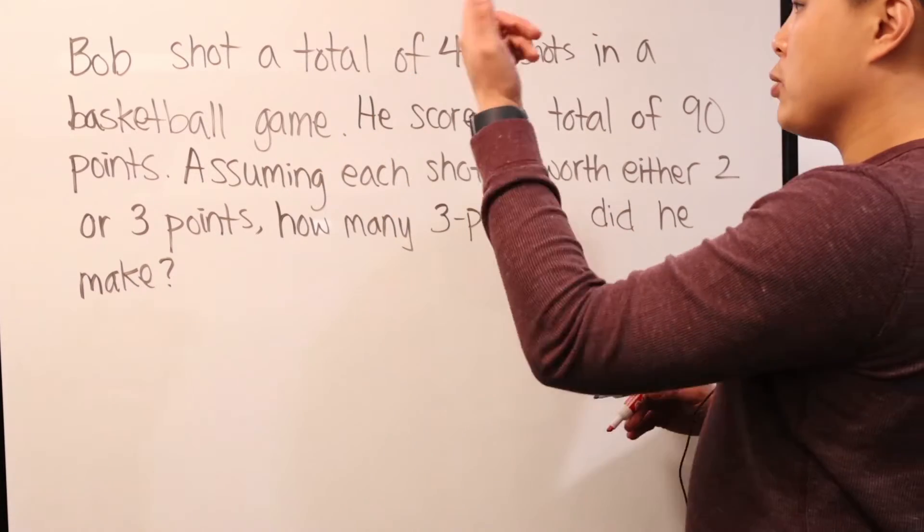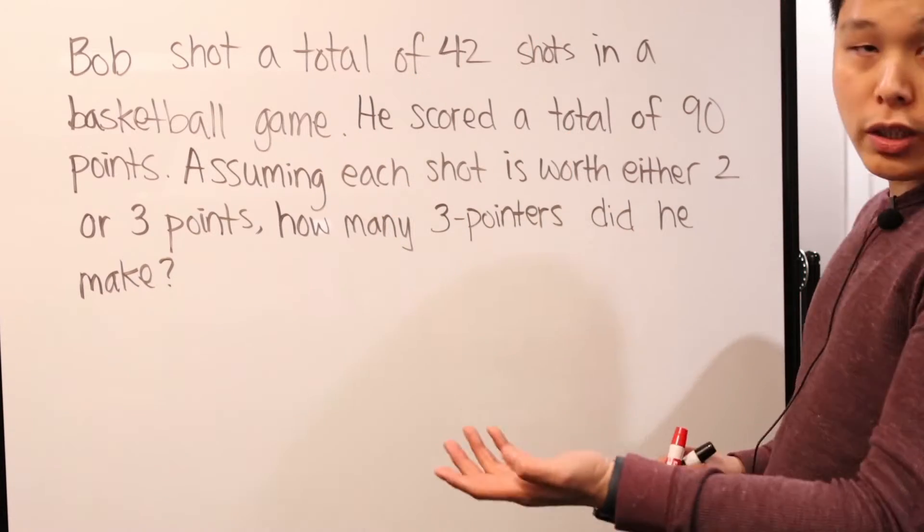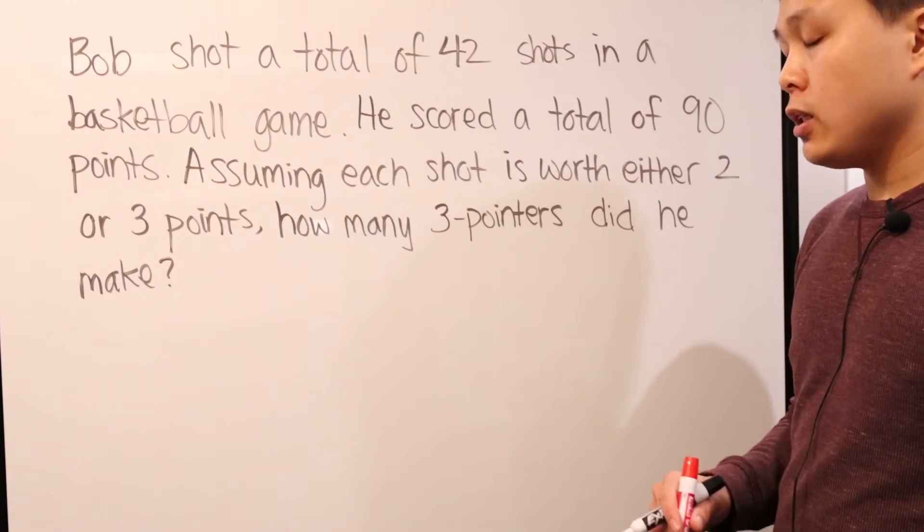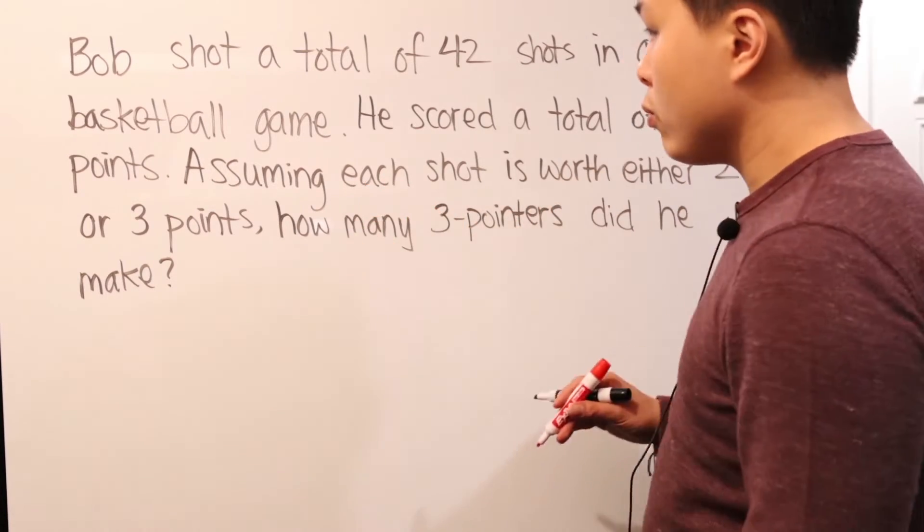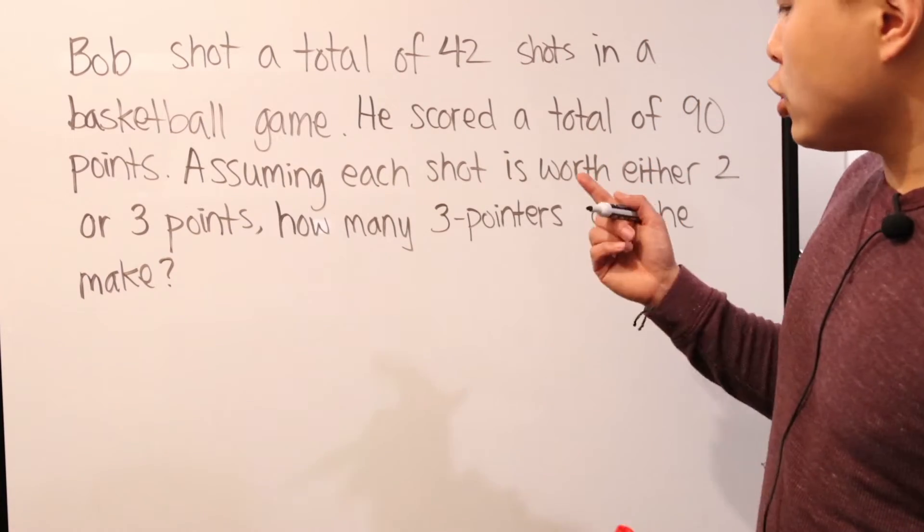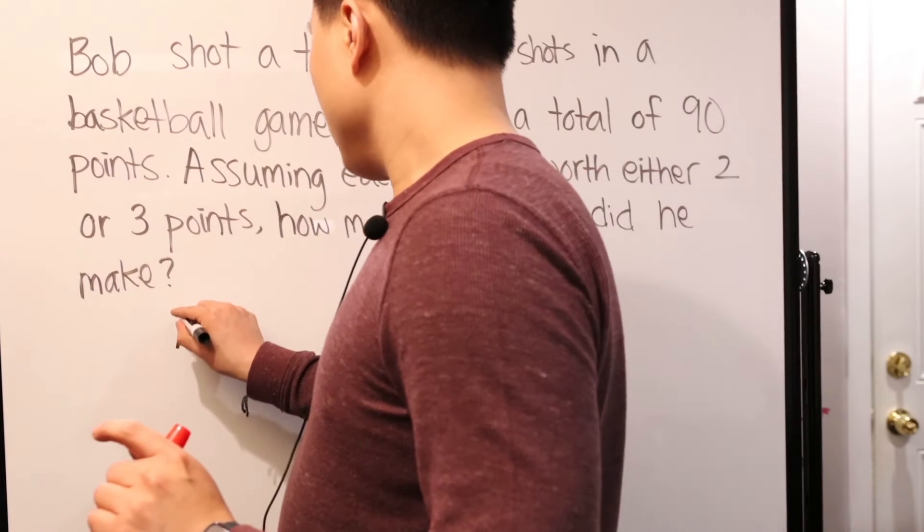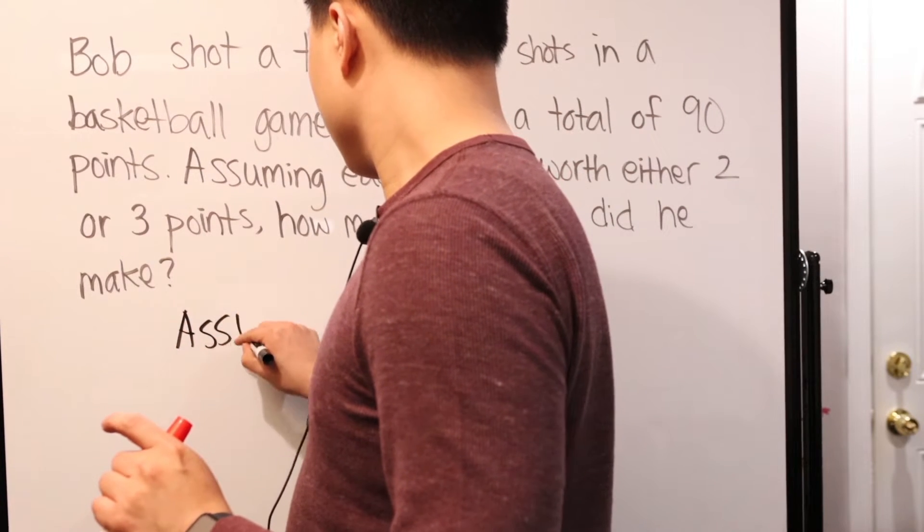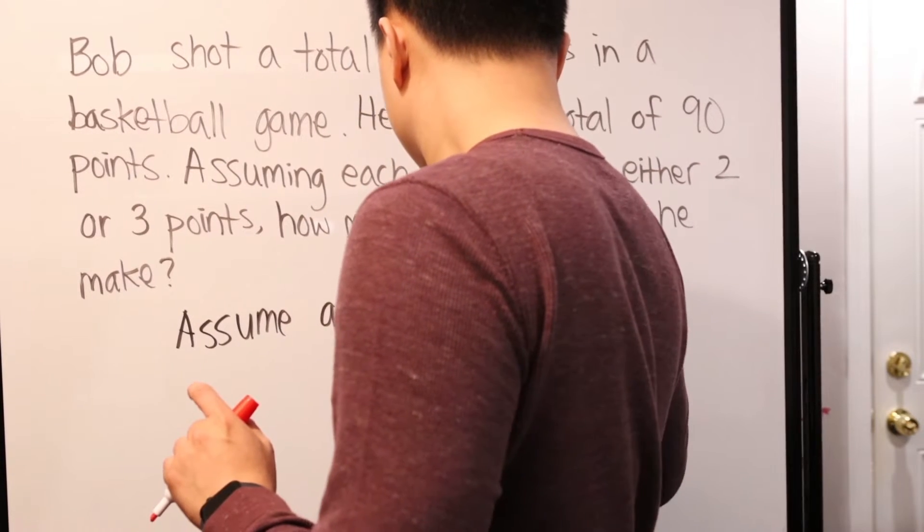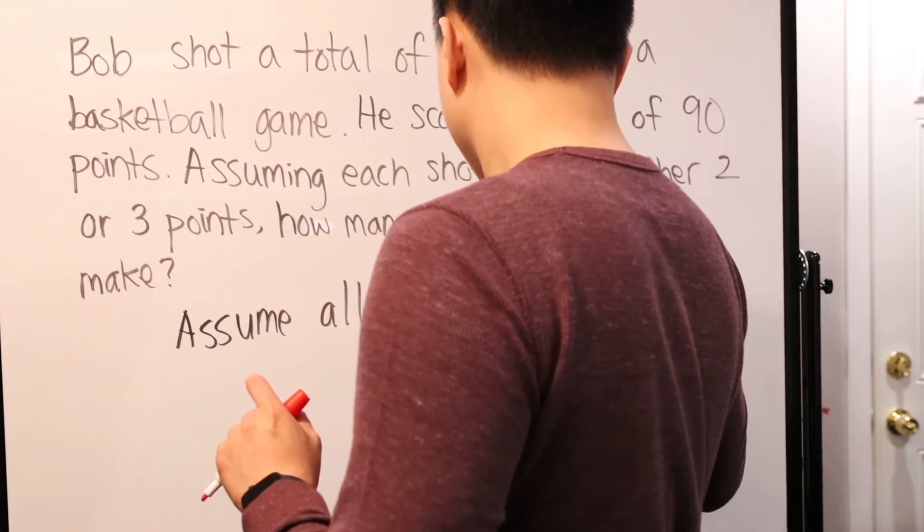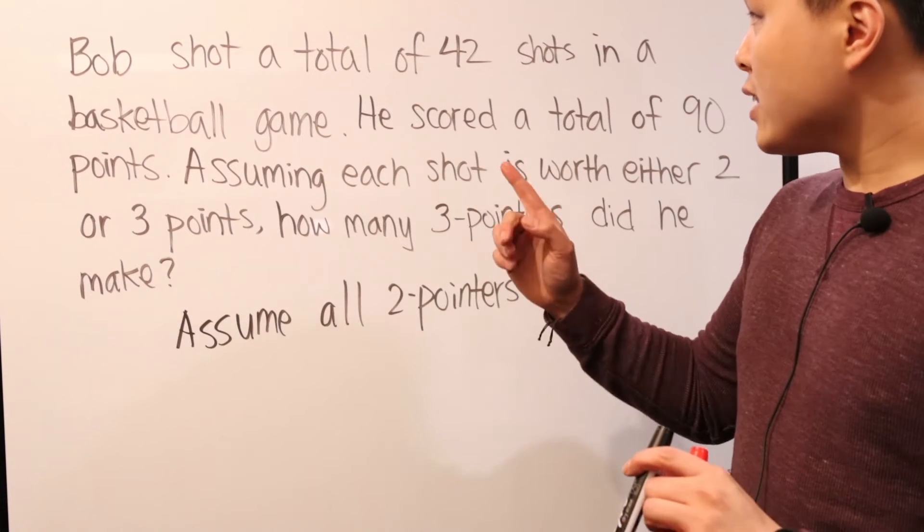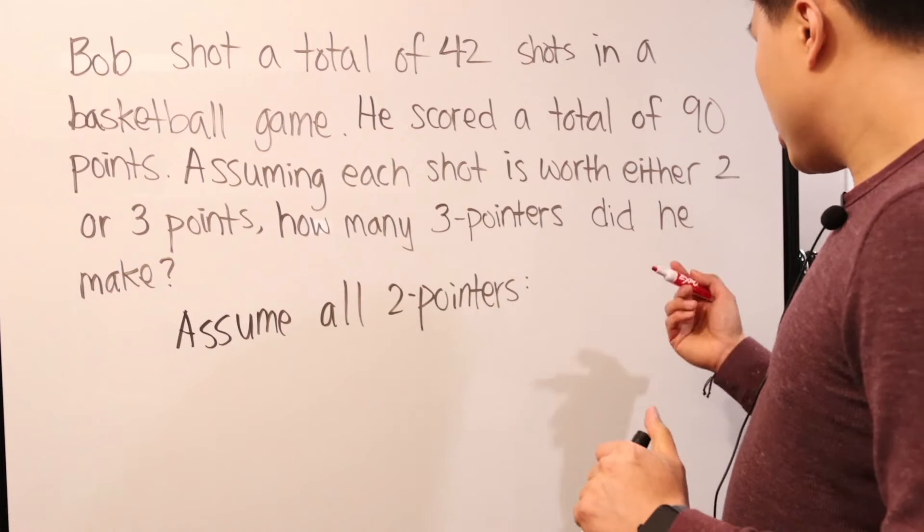We see that again, Bob shot a total of 42 shots. And then they're either going to be two-pointers or three-pointers and he scored a total of 90 points. We're just trying to find how many three-pointers he made. As long as we figured that out, we're good. We don't have to go through that exact process to solve this. Well, let's just make an assumption. Let's say, assume they're all two-pointers. This is just my way of thinking. And then you can follow along, so I'm going to write it all up.